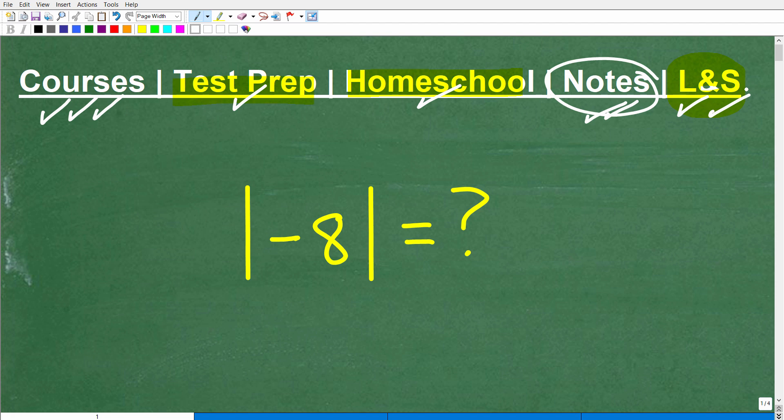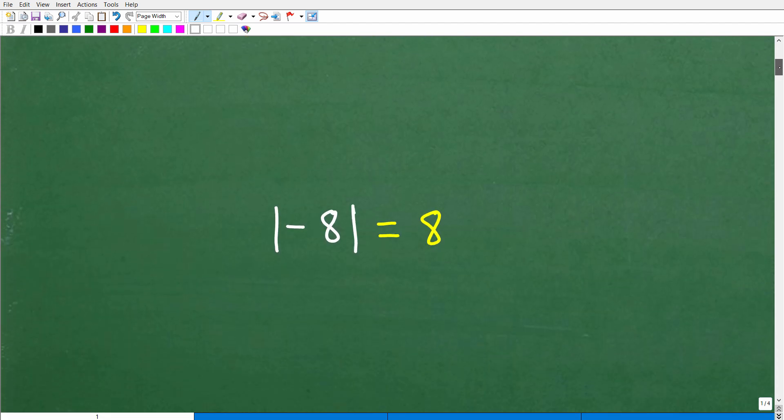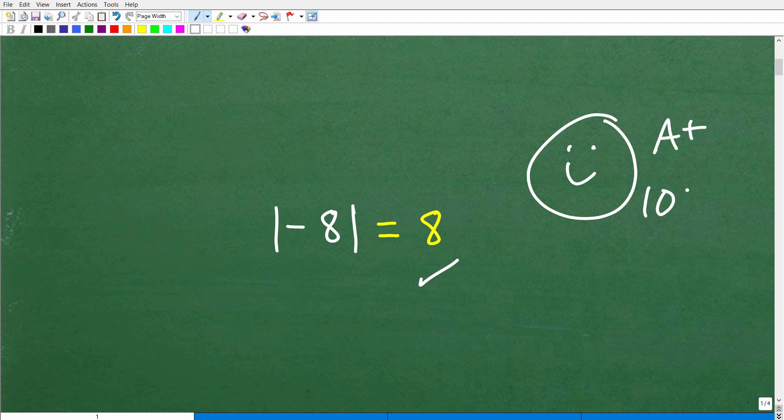Okay, so let's go ahead and answer this question. The absolute value of negative 8 is equal to 8. That is the answer. And that's super easy. And if you got this right, let's go ahead and still give you a nice little happy face and an A plus and 100% for being awesome in math.